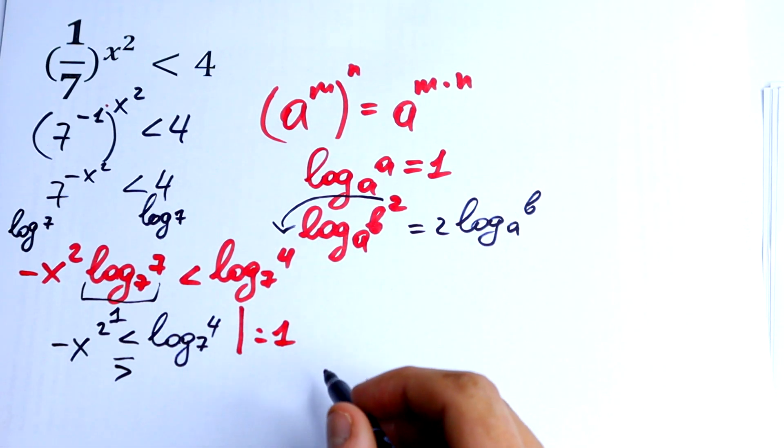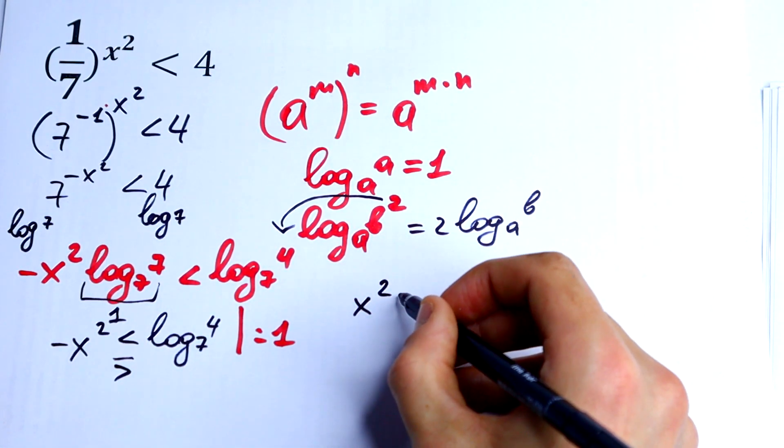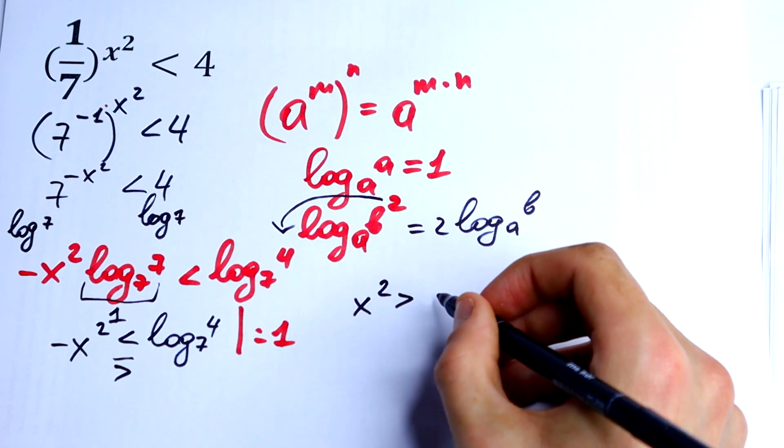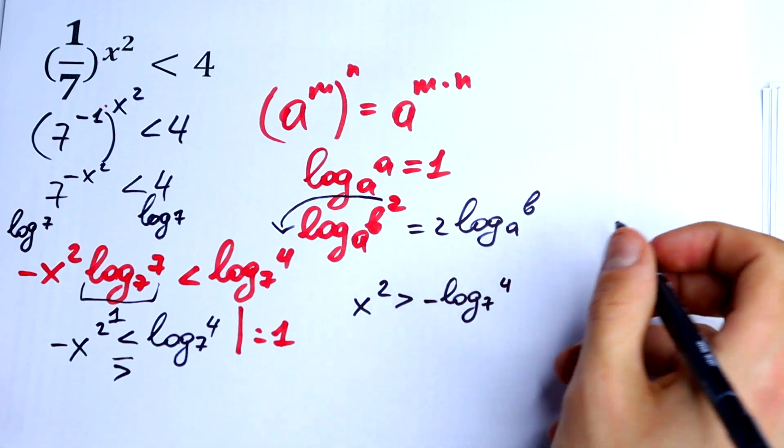So we will have x squared is greater than minus log base 7 of 4.